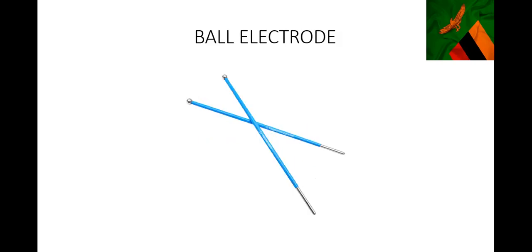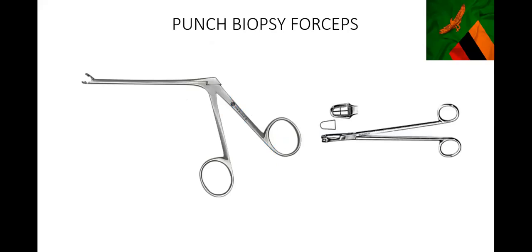This is a ball electrode. Once you cut with a loop electrode, sometimes there are bleeding parts, so you use this to touch those bleeding parts - the silver ball part is connected to electricity and is hot. You gently touch the bleeding parts to stop the bleeding. This is a punch biopsy forcep, also used in cervical cancer issues. When you see an abnormal lesion on the cervix, you punch that area to get a biopsy sample.